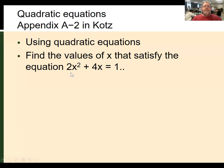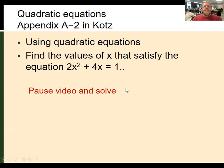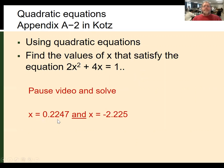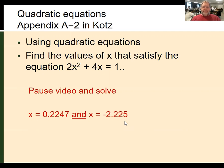Here is a simple quadratic equation: 2x² + 4x = 1. I want you to pause the video and find the values that satisfy this equation. When you solve it, you should come up with two values: x = 0.2247 and x = -2.225. Both are mathematical solutions to this equation. We need to pay attention to the fact that we get two solutions from the quadratic equation, but sometimes one of them doesn't make sense chemically, so we can eliminate it.